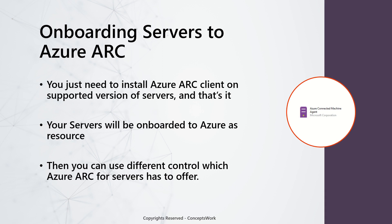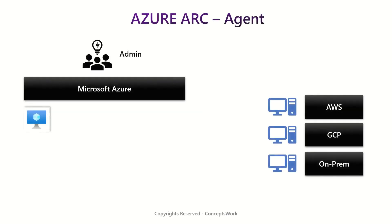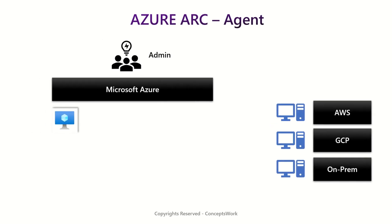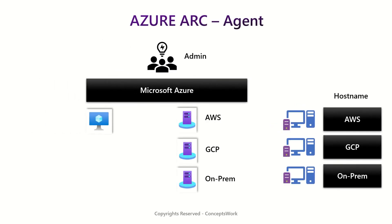As a quick recap of how the machines get listed — this was covered in the last video — it's the same inventory page of resources. You can log into the Azure portal, click on resources, and apply a filter of, say, VM and Azure Arc servers. All the AWS, GCP, and on-prem onboarded servers will then start getting listed on the console.